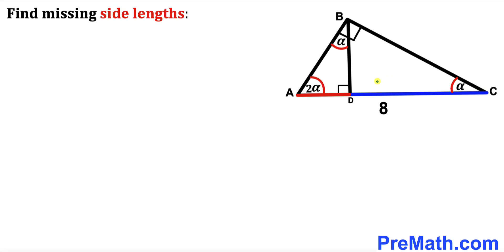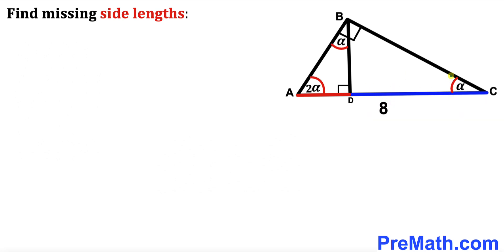Welcome to pre-math. In this video we have a right triangle ABC along with perpendicular BD, such that the whole side length AC is 8 units. Angle DCB is alpha, angle DAB is 2 times alpha, and angle ABD is alpha. Both angle BDC and angle BDA are 90 degrees. Our task is to find the length of all sides and segments.